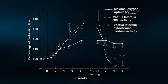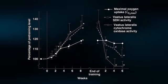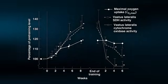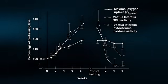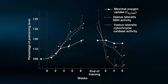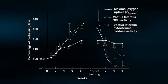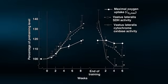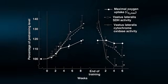However, when these same individuals stopped all training for a period of six weeks, mitochondrial oxidative capacity rapidly returned to pre-training values while maximal oxygen uptake had a more gradual decline. Thus, once the stimulus of regular exercise training has been removed, you will eventually lose any previous training adaptations.